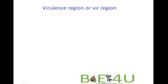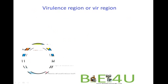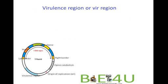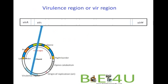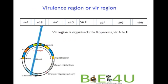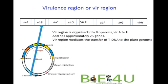Another important part of the Ti plasmid is the virulence region, or vir region. In this region, a number of genes are present organized into eight operons designated virA to virH, with approximately 25 genes total. The vir region mediates the transfer of T-DNA to the plant genome and regulates successful T-DNA integration into the plant genome.